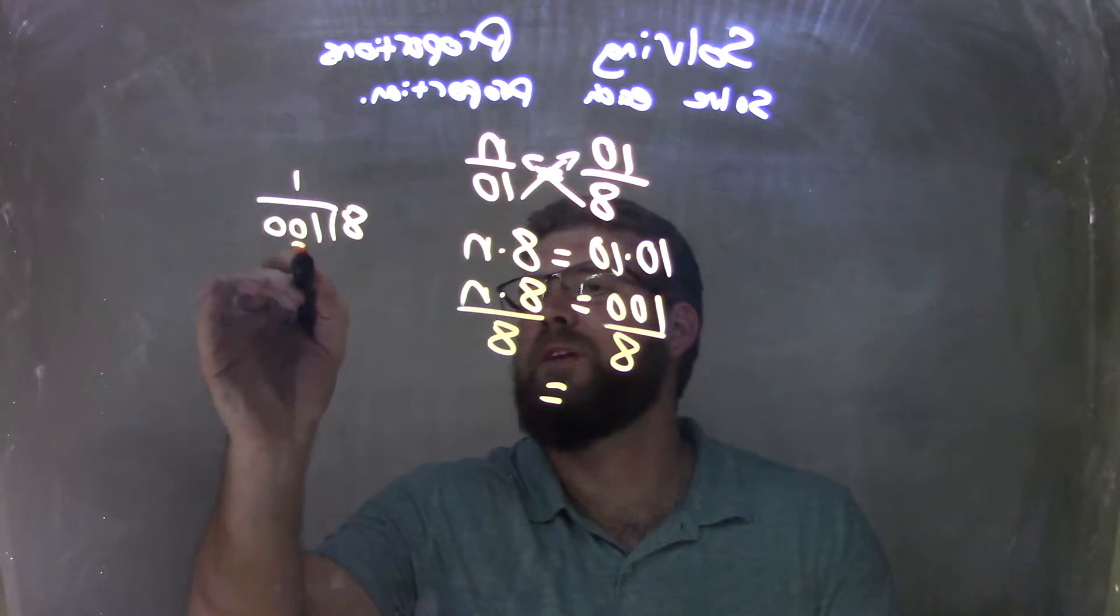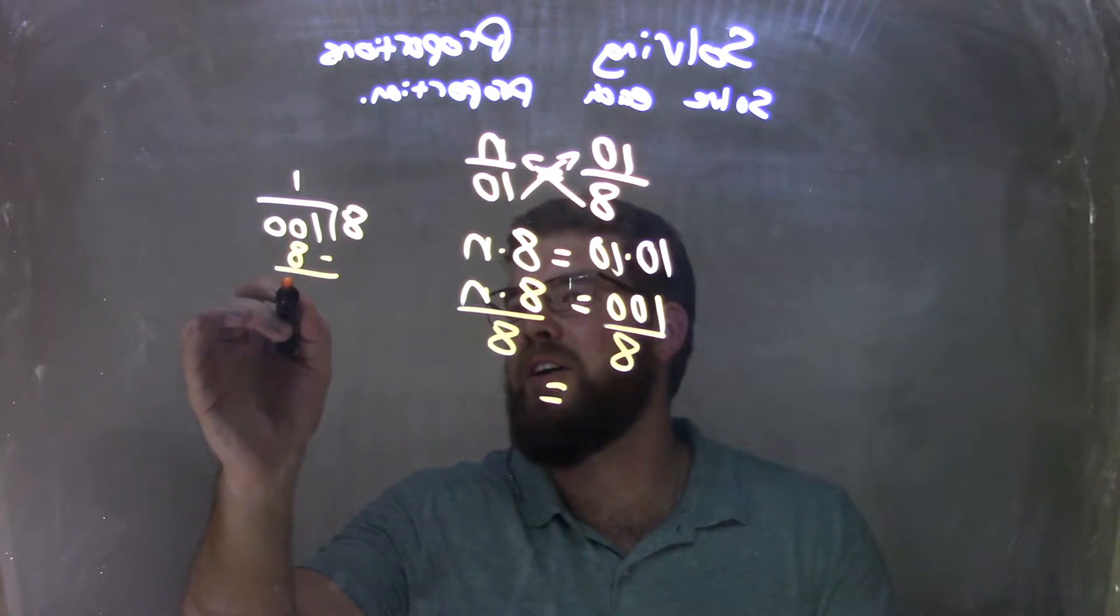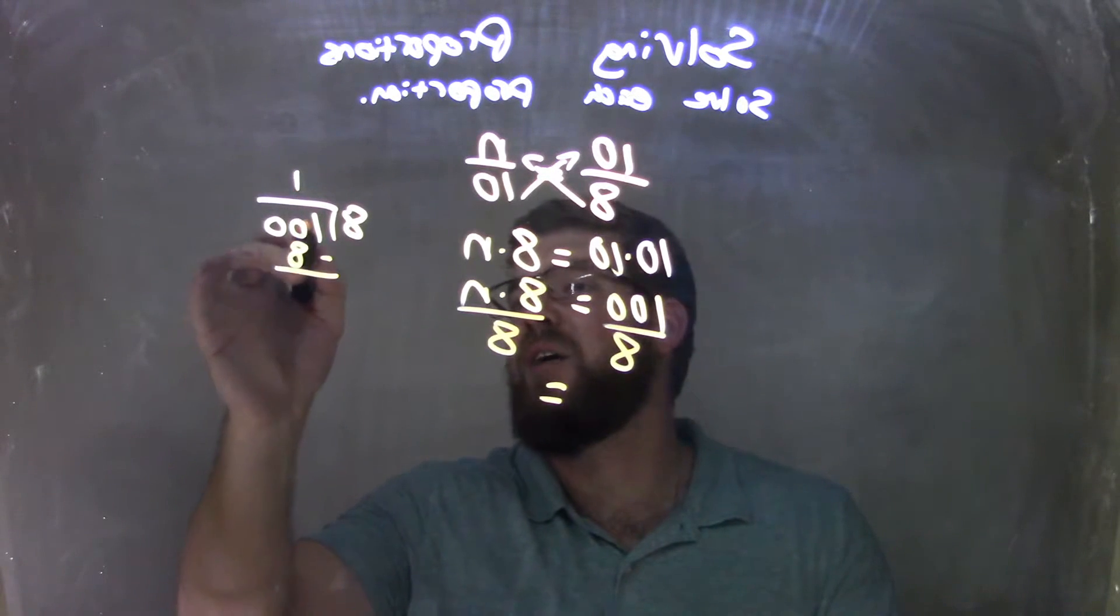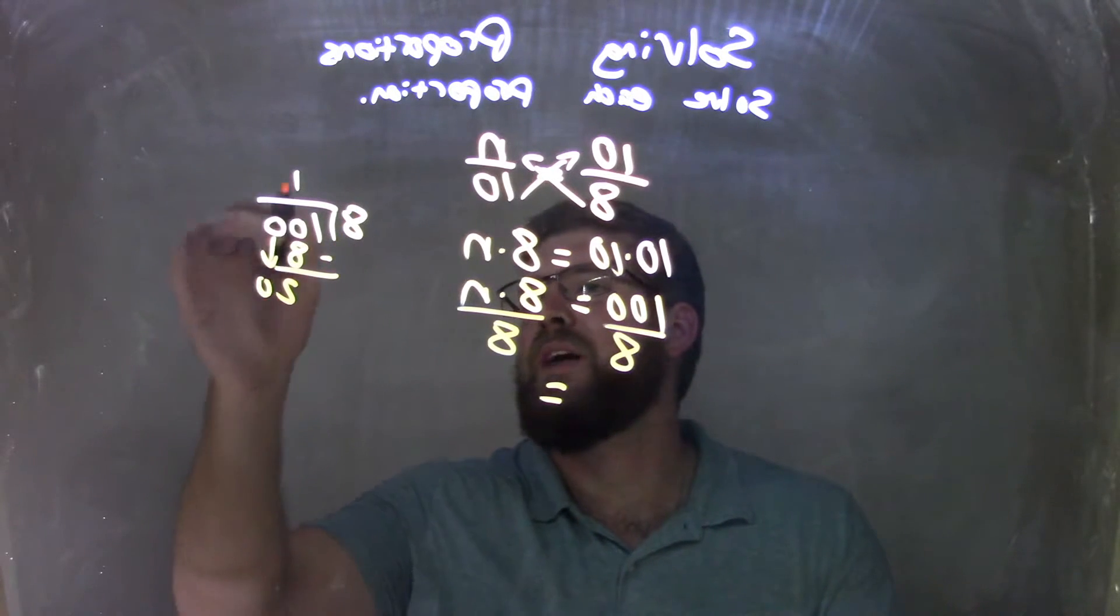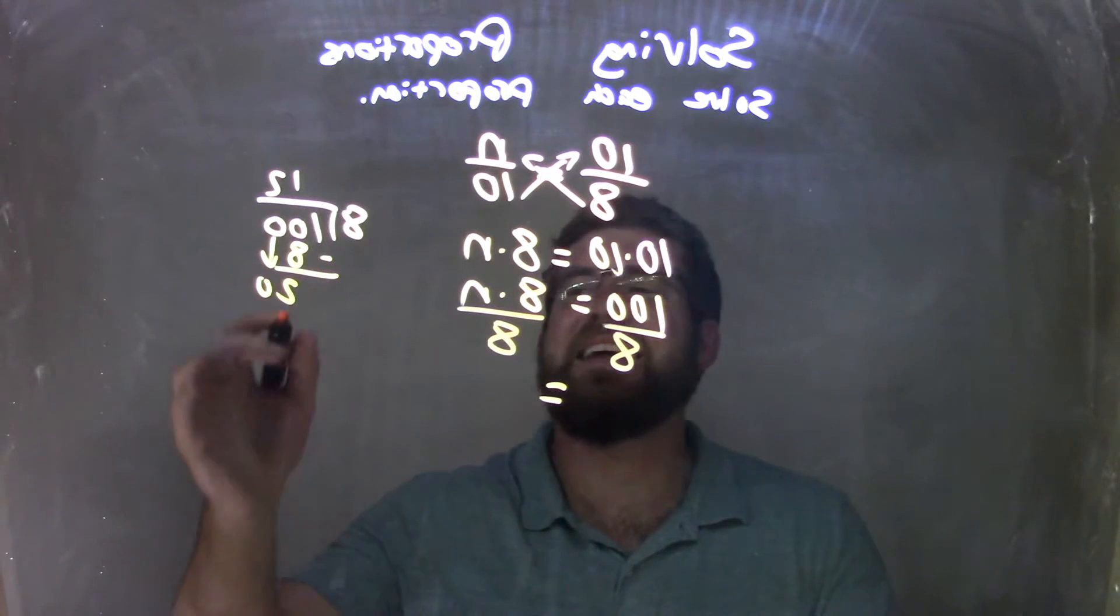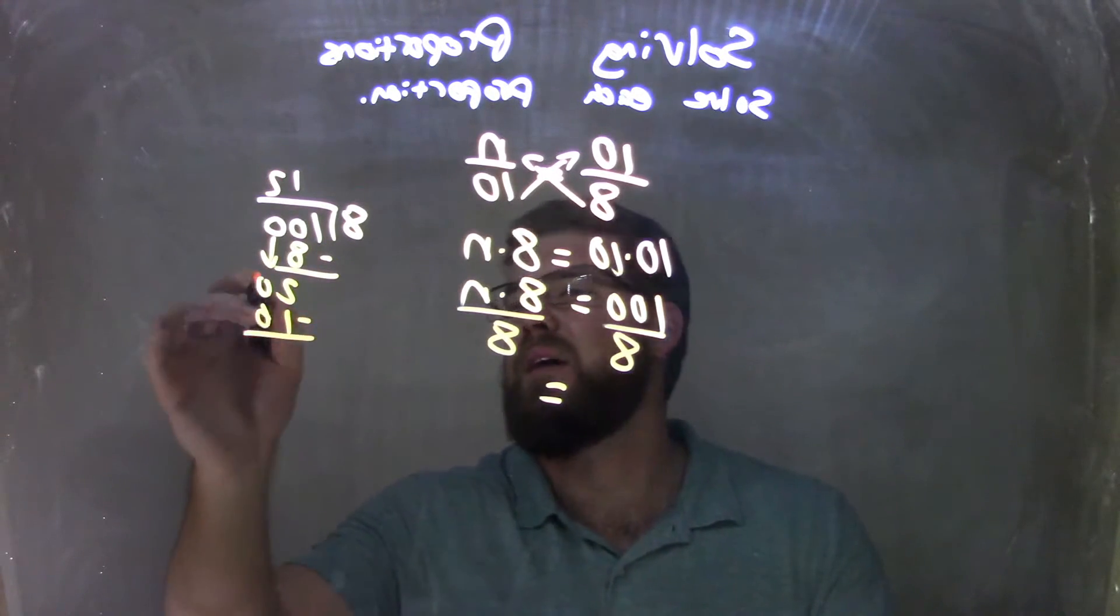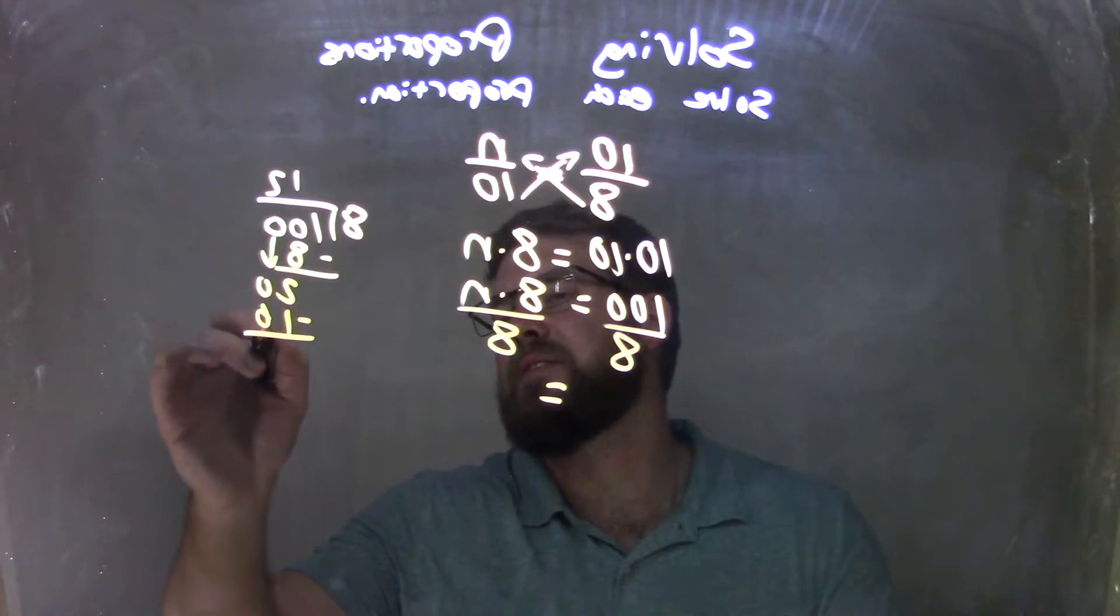8 into 10, 1 time. 1 times 8 is 8. 10 minus 8 is 2, bring down the 0. 8 goes into 20, 2 times. 2 times 8 is 16. 20 minus 16 is 4.